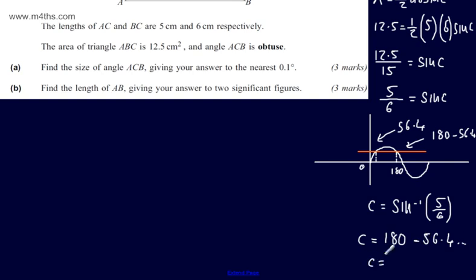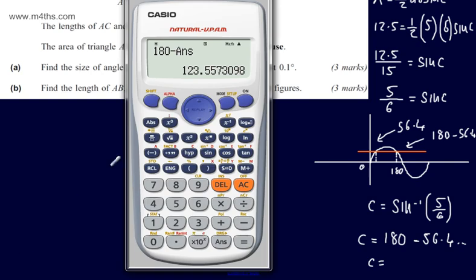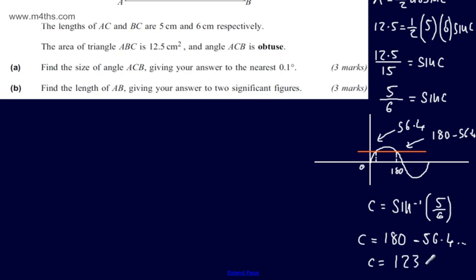Therefore we can say that C is equal to, and we need to give this to the nearest 0.1 degree, that's going to be 123.6 degrees. So 123.6 degrees, and that now is to 0.1 degree. Just putting that in, and we've done that part.